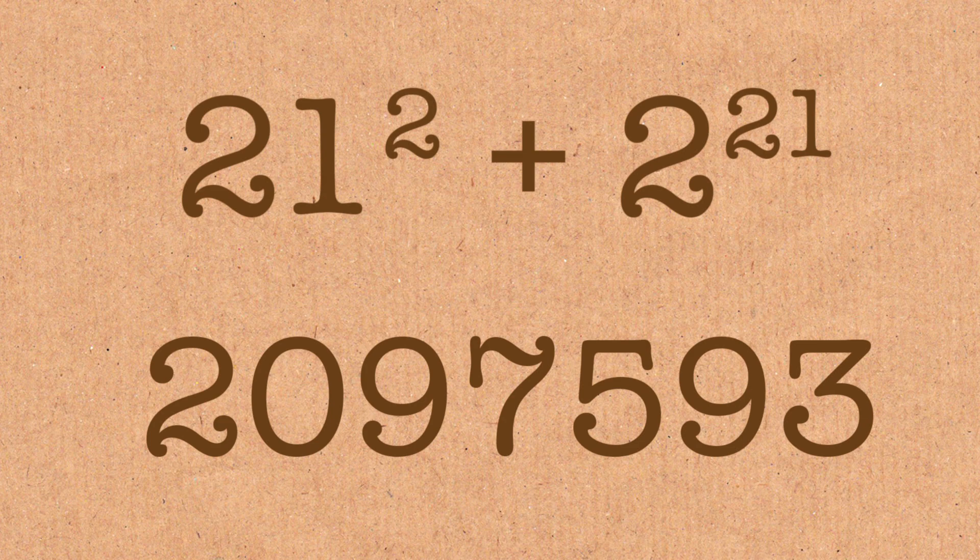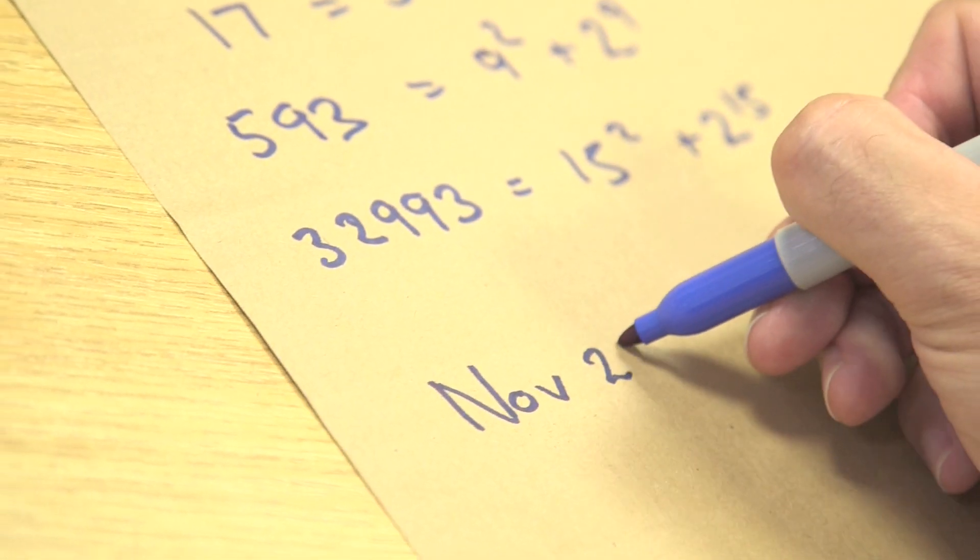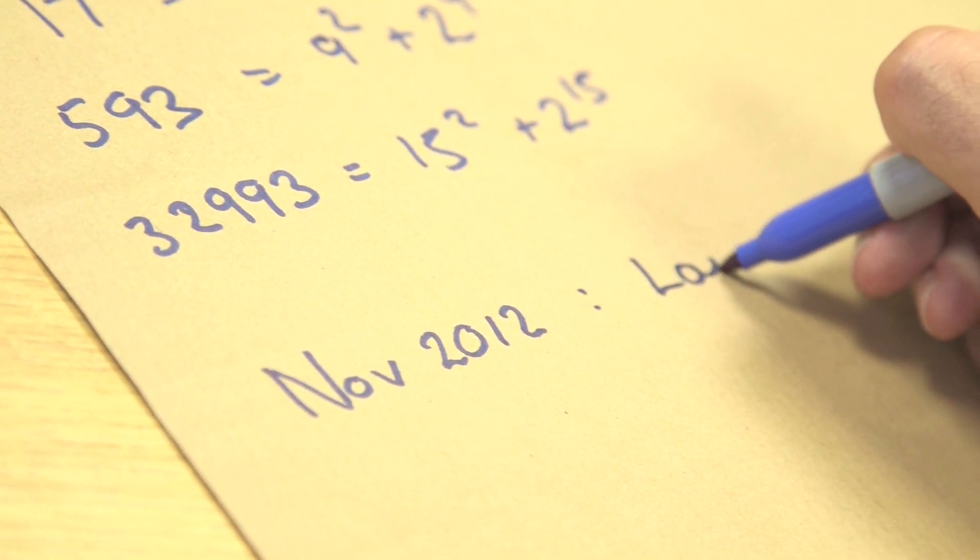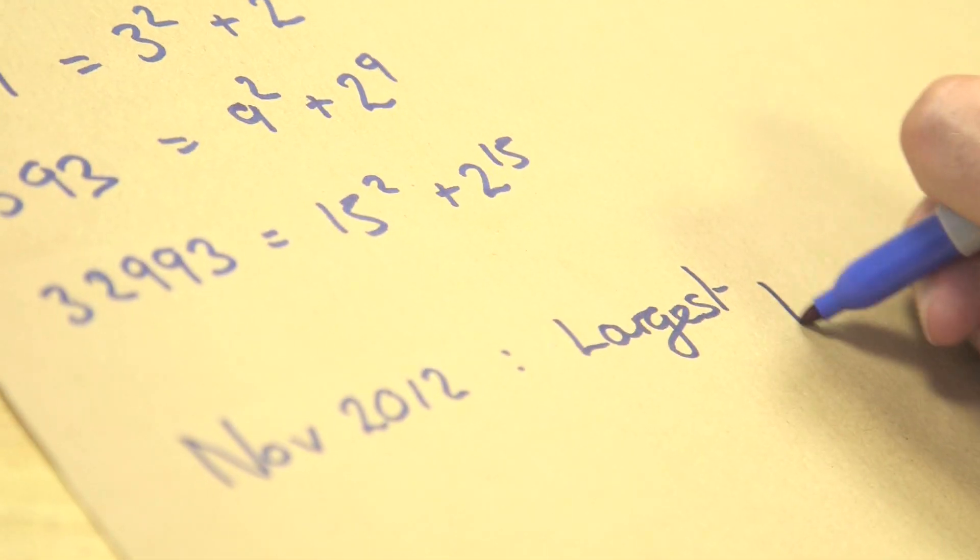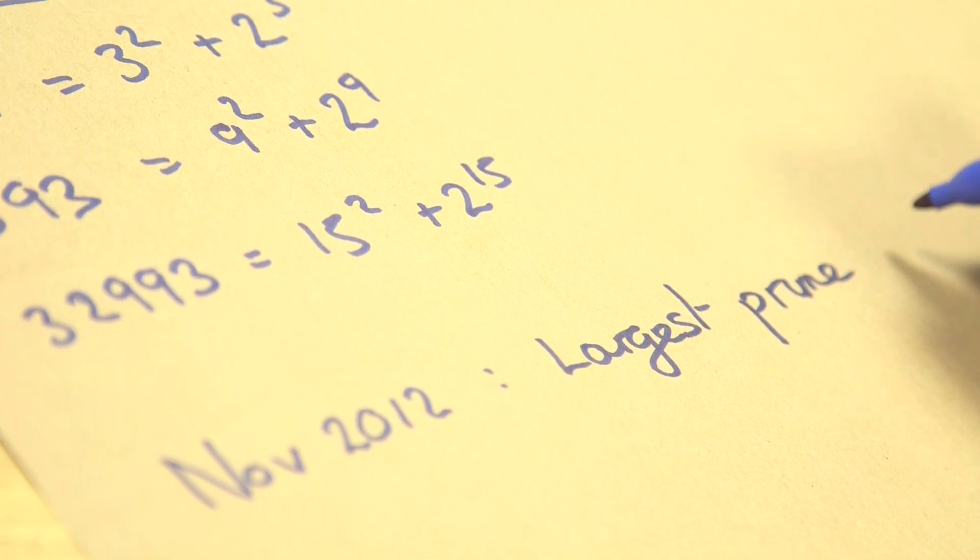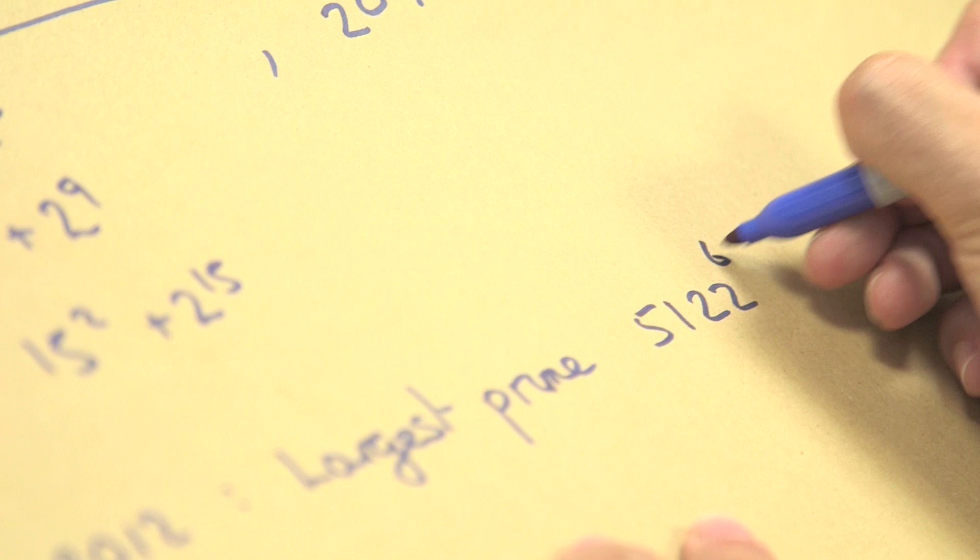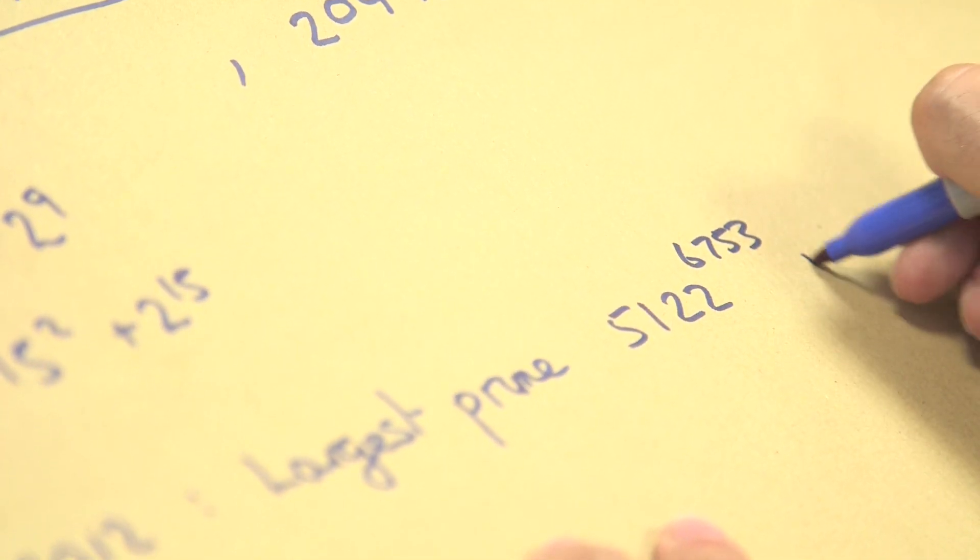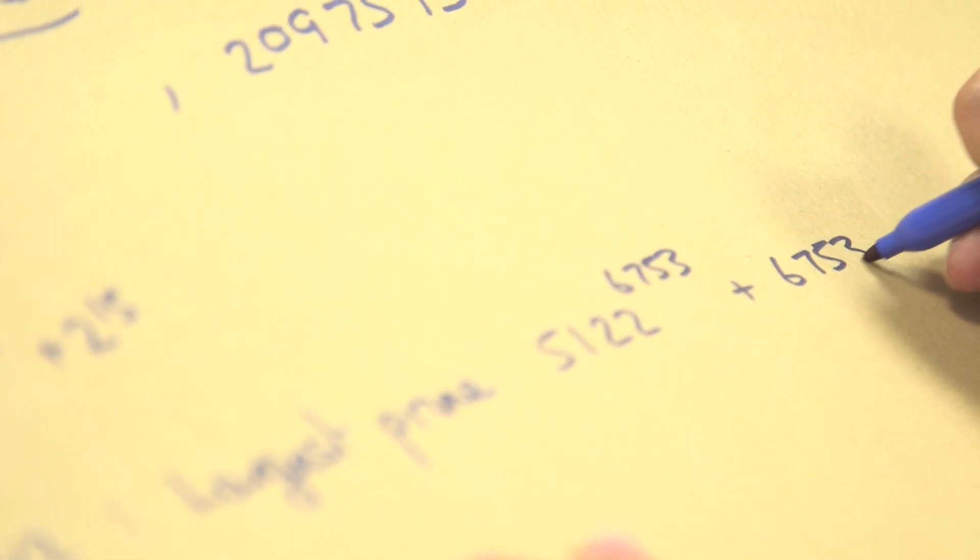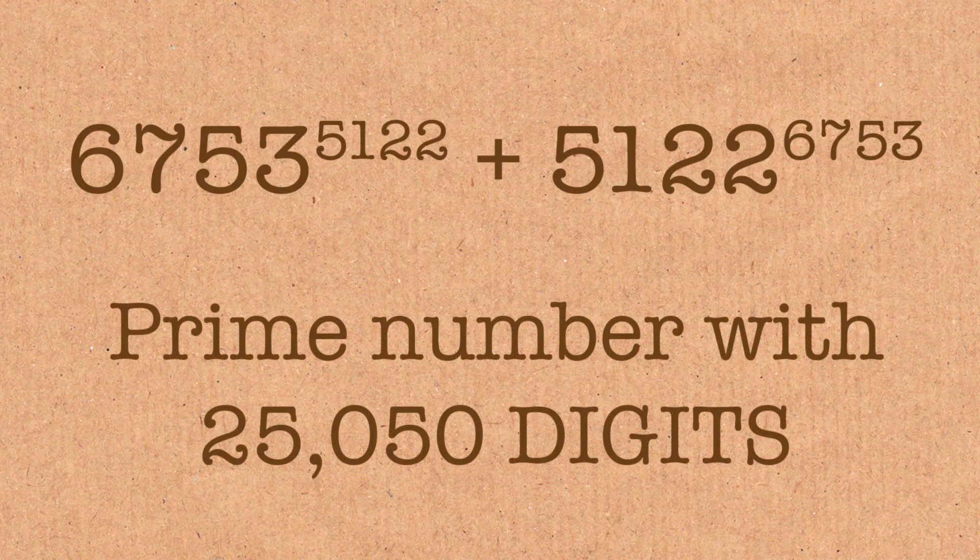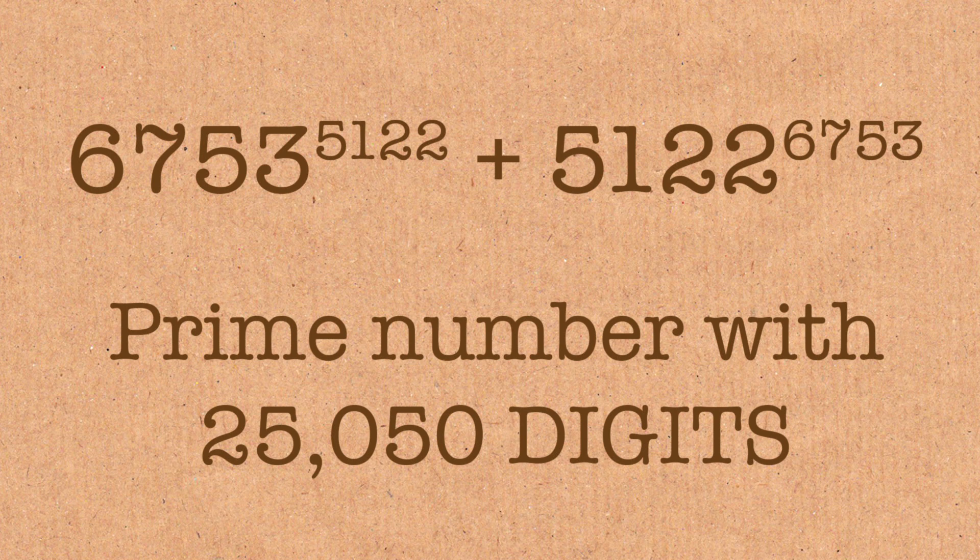And, in fact, so what are the biggest? Up to November of 2012, the largest Leyland prime, considerably smaller than the largest prime, was the following one. But just the way it works, the way it breaks down is so neat. It's 51,222 to the power 6,753 plus 6,753 to the power 51,222. And this is a number which has a mere 25,050 digits. You need to write it out for us. Got any more paper?